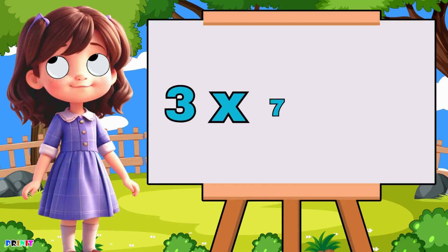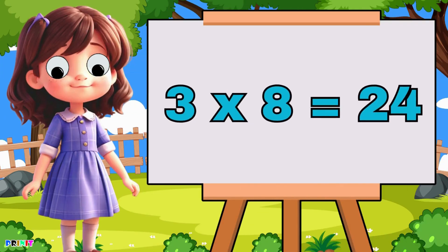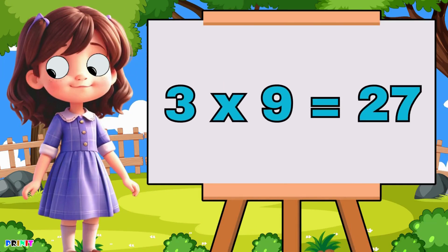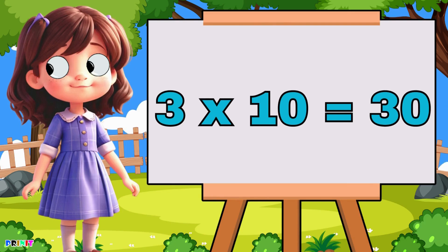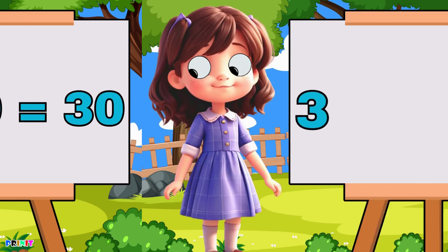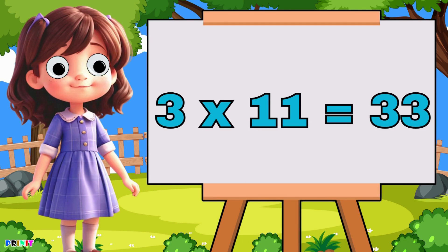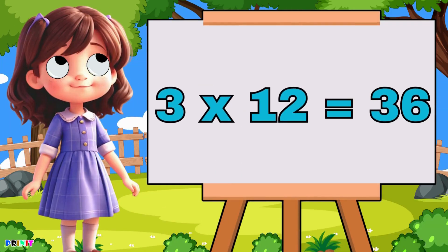Three seven's are twenty-one, three eight's are twenty-four, three nine's are twenty-seven, three ten's are thirty, three eleven's are thirty-three, three twelfth are thirty-six.